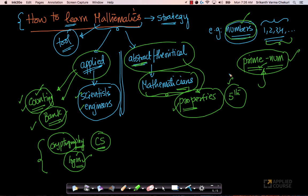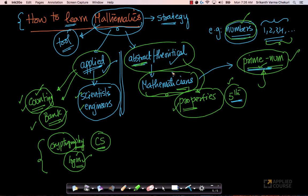So mathematicians worry about properties of nature and properties of objects like numbers, while applied mathematicians, scientists, and engineers worry about how to take these theoretical concepts and apply them. So this is important because sometimes, when you learned about prime numbers, you learned all the theoretical properties without being able to appreciate how these are useful. There are two ways of learning mathematics: the mathematician's way and the applied scientist's way, and both are important.